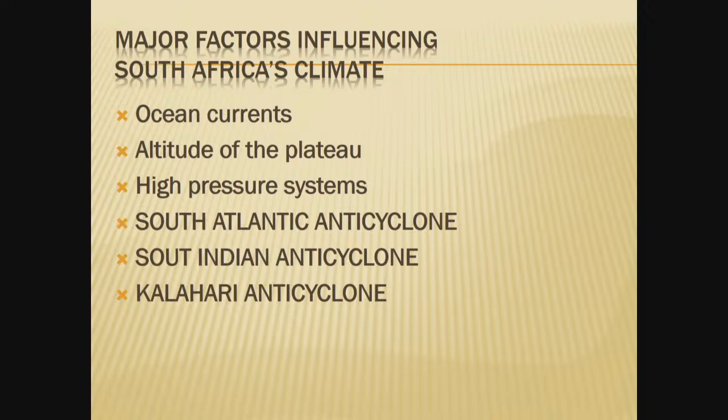You know them well. It's the South Atlantic anticyclone. We call these high-pressure cells anticyclones because the circulation of air is anticlockwise in the Southern Hemisphere. So we have these three high-pressure cells: the South Atlantic anticyclone, the South Indian anticyclone, and the Kalahari anticyclone.